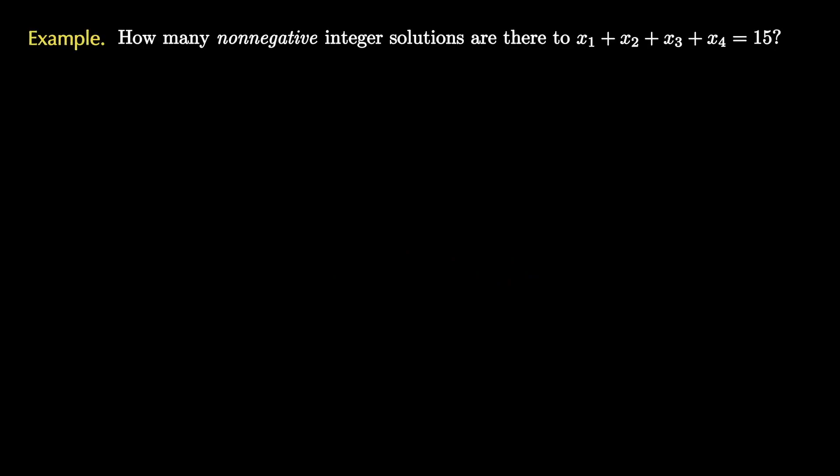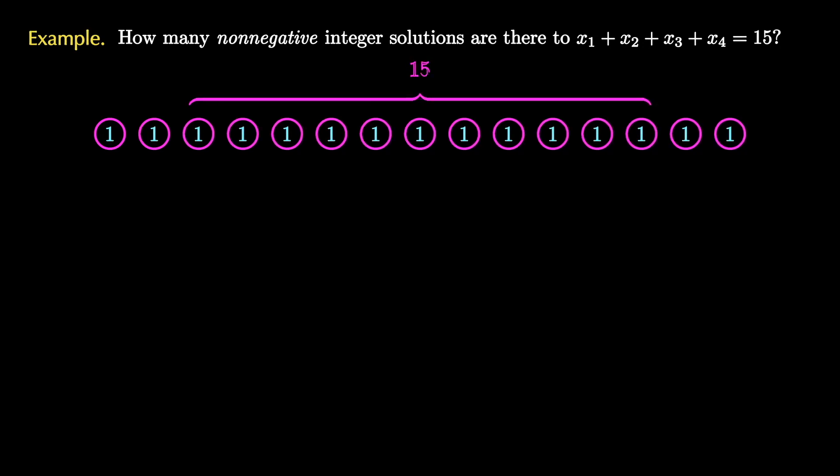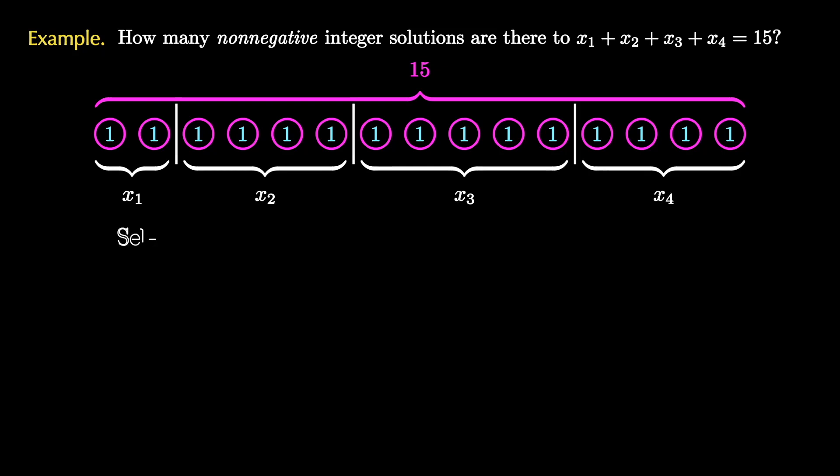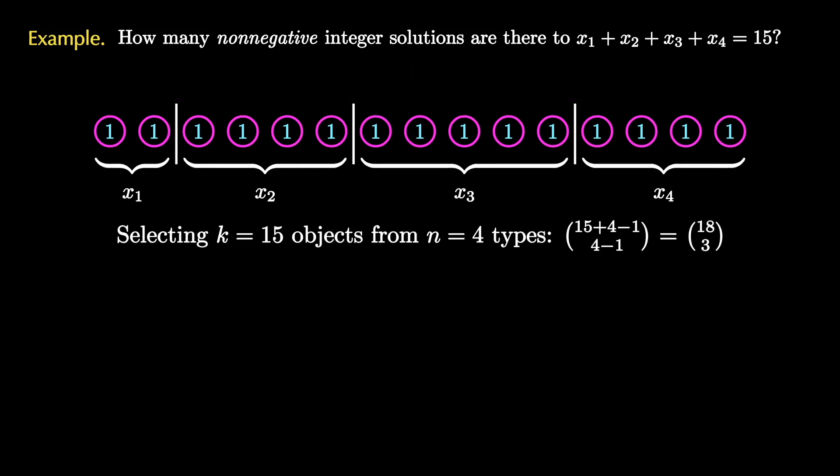Let's see two more related examples. Let's figure out how many non-negative integer solutions there are to the equation x1 plus x2 plus x3 plus x4 equals 15. We can imagine there being a list of 15 one tokens and we place three dividers so that it creates four boxes for x1, x2, x3, and x4. Therefore we're selecting k equals 15 objects from n equals four types which we know is (18 choose 3) total ways.